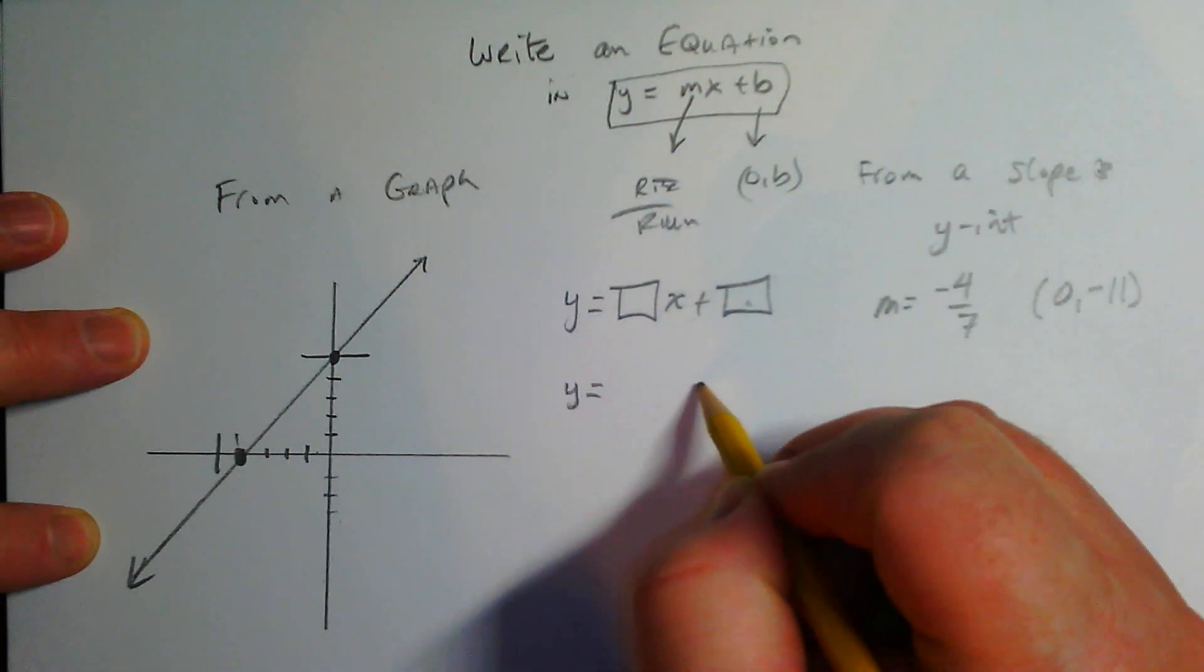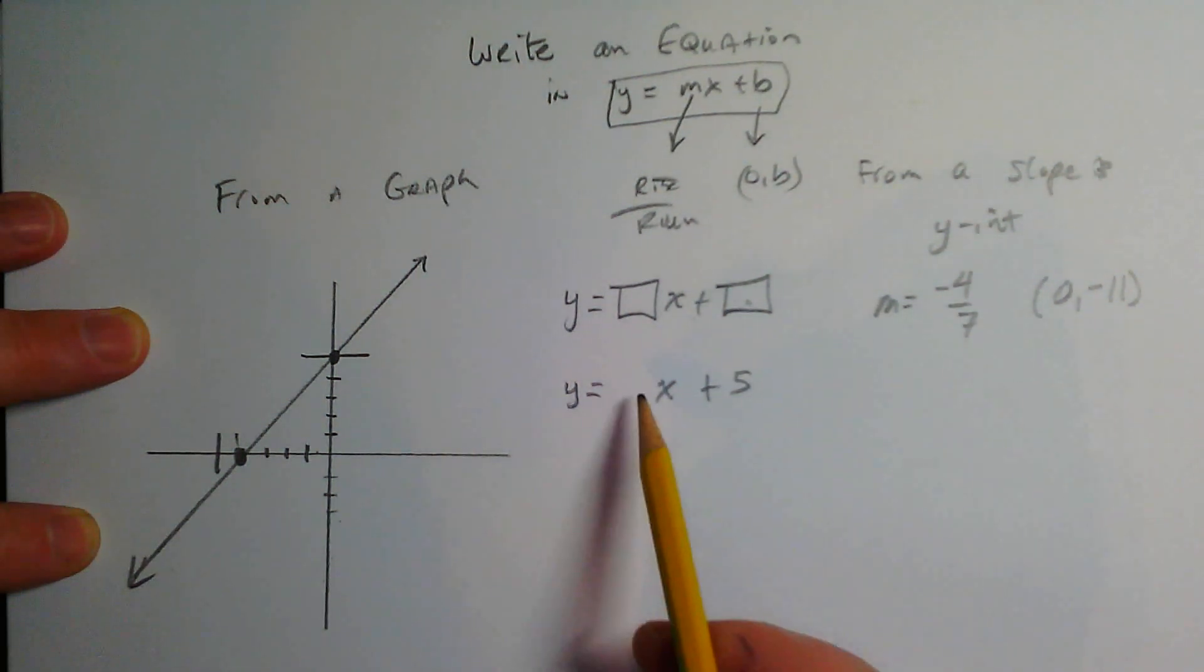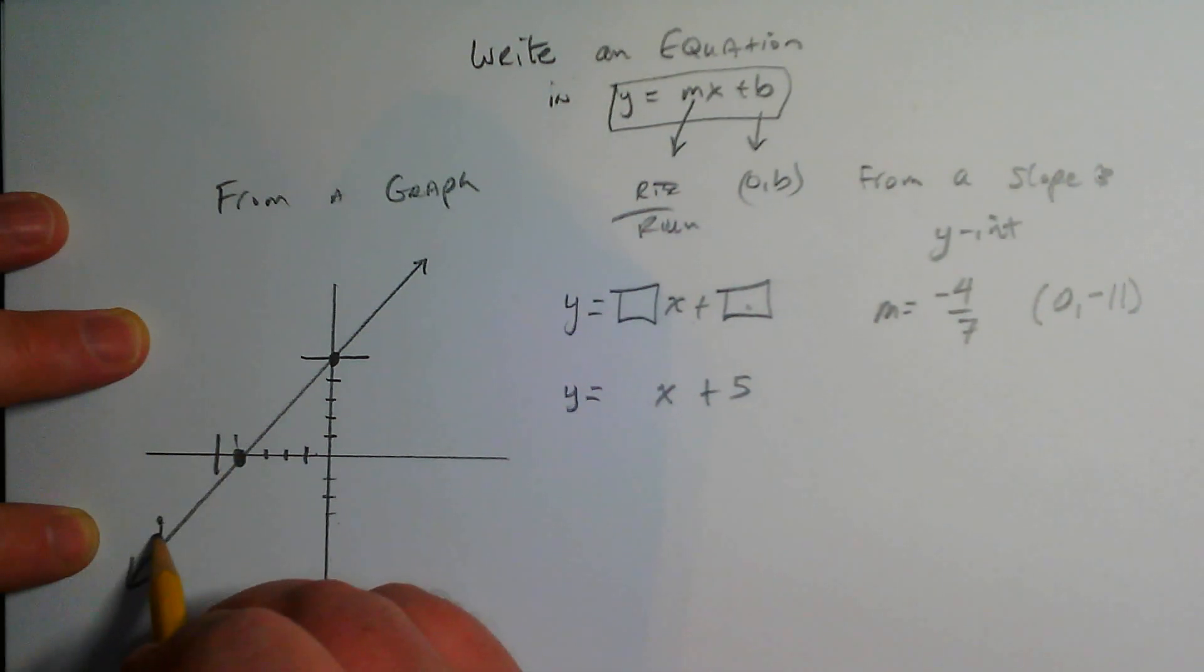So what we have is y equals... plus b. I know there's an x there, so I got to figure out now: what is the slope? What's the number times x? This slope right here - imagine you're standing...